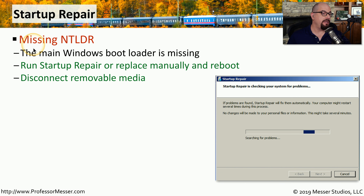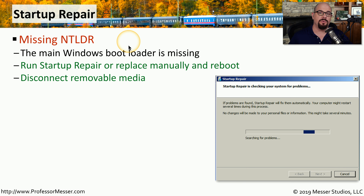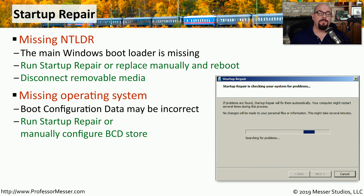If Windows isn't starting and you're seeing a message about a missing NT loader, this refers to the old bootloader from previous versions of Windows. An application may have overwritten the existing bootloader, or you may have media trying to boot from those old-style bootloaders. If you have DVD ROMs or USB drives connected, disconnect those and try booting from the normal OS drive. You can use the Windows Startup Repair utility to automatically configure the bootloader, or use the recovery console and the bootrec command manually. Startup Repair is also very good at resolving problems with finding an operating system and starting those files.